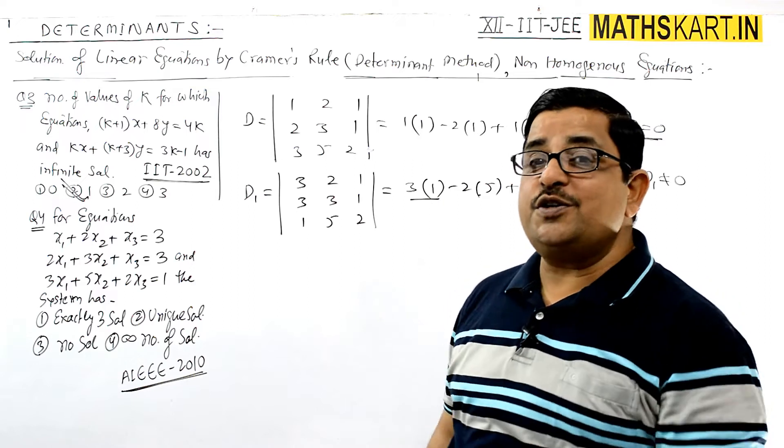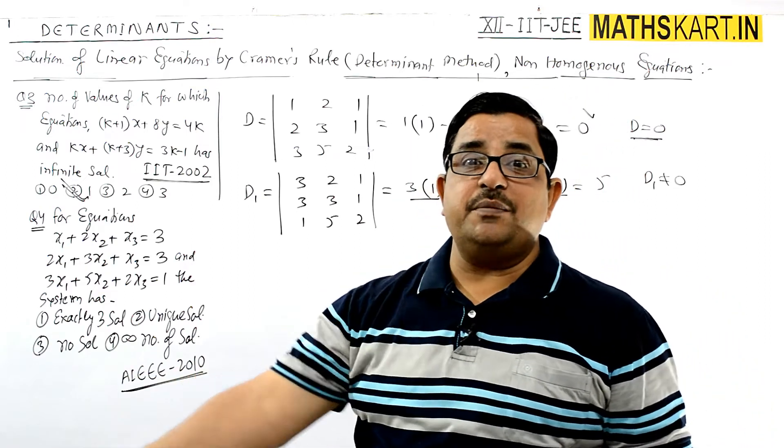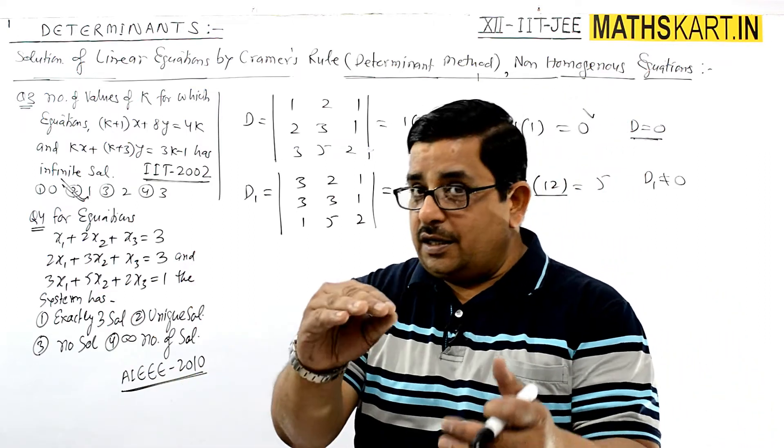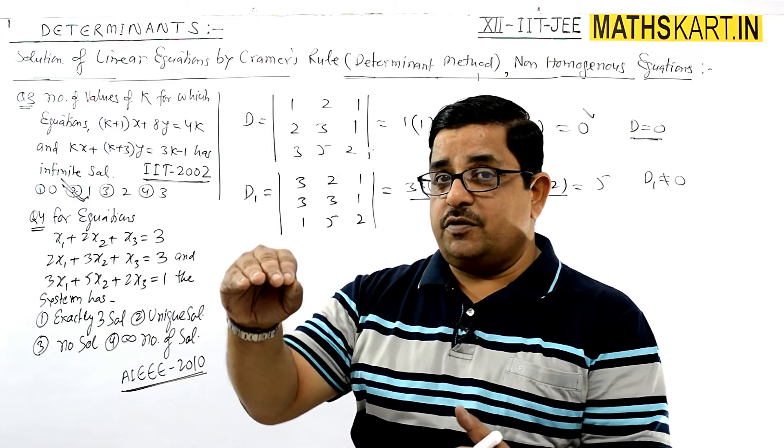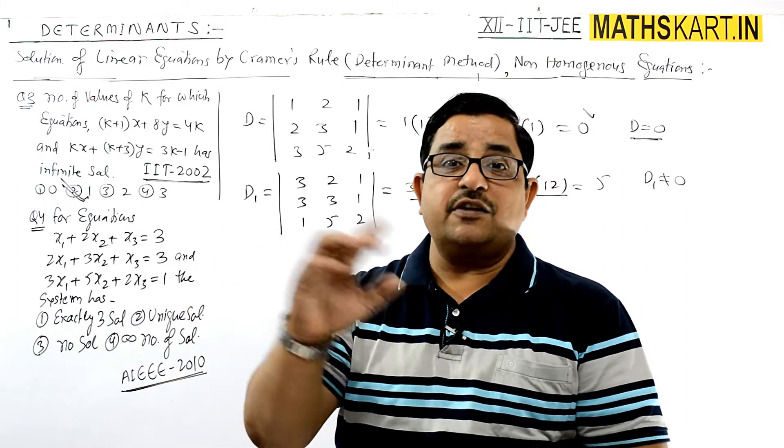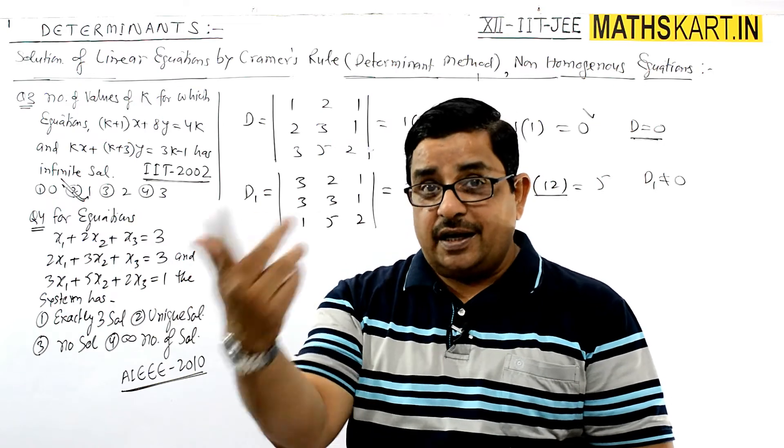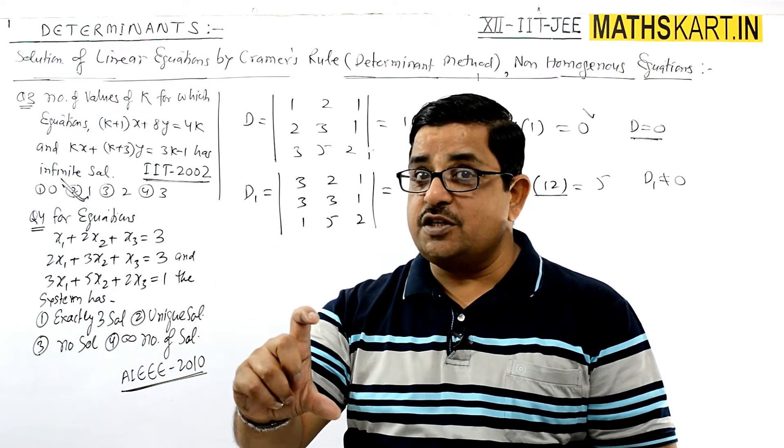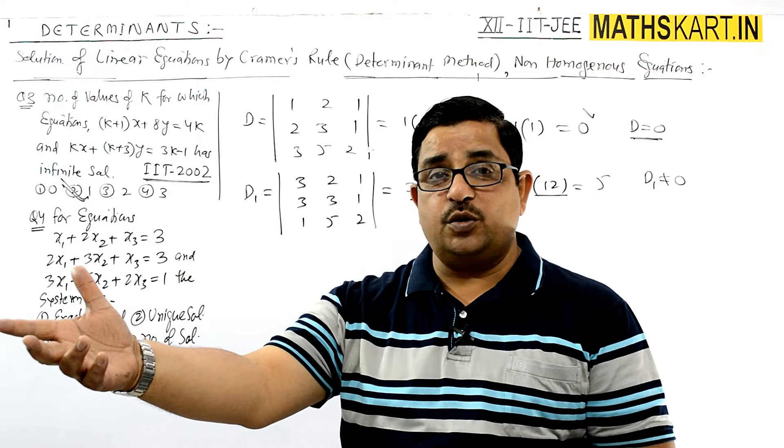If at least one of D1, D2, or D3 is non-zero while D = 0, there's no solution. For infinite solutions, we'd need D1 = D2 = D3 = 0. But since D1 ≠ 0, we don't need to check the other determinants.